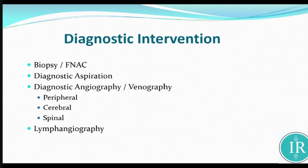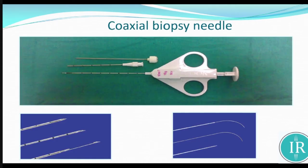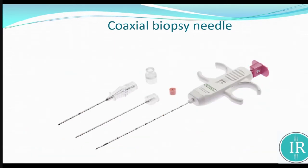We go for diagnostic interventions: biopsy, FNAC, any type of collection we can aspirate. There are diagnostic aspirations, therapeutic aspirations, diagnostic angiography — cerebral angiography, peripheral angiography, spinal angiography — and we can also do lymphangiography. This is the routinely used diagnostic coaxial biopsy needle, with which we can take a core biopsy for any type of lesion. This is a CT-guided biopsy of a para-aortic node.